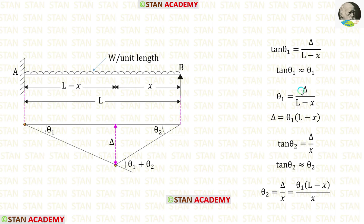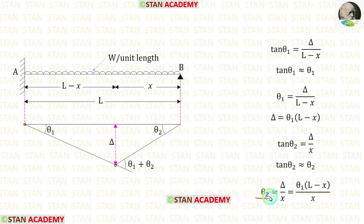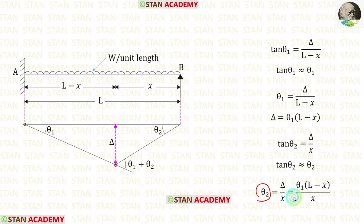Now let us make an expression for delta. Taking L minus x to the other side, we get delta = theta1 · (L minus x). Now taking this other triangle: tan(theta2) = delta / x. We know that tan(theta2) is approximately equal to theta2, so theta2 = delta / x. Applying the value of delta, theta2 = theta1 · (L minus x) / x.